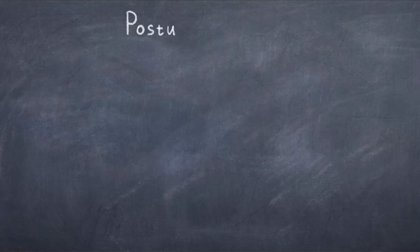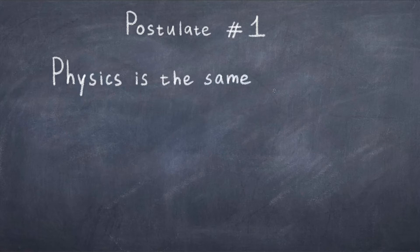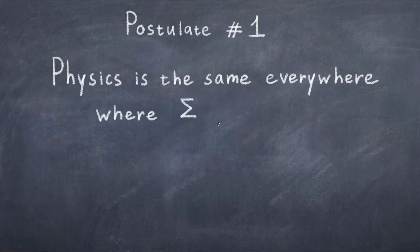Now let's consider what this theory is about in more detail. Einstein's theory of special relativity is based on two postulates. The first postulate states that the laws of physics are invariant or the same in all inertial reference frames or in non-accelerating reference frames.